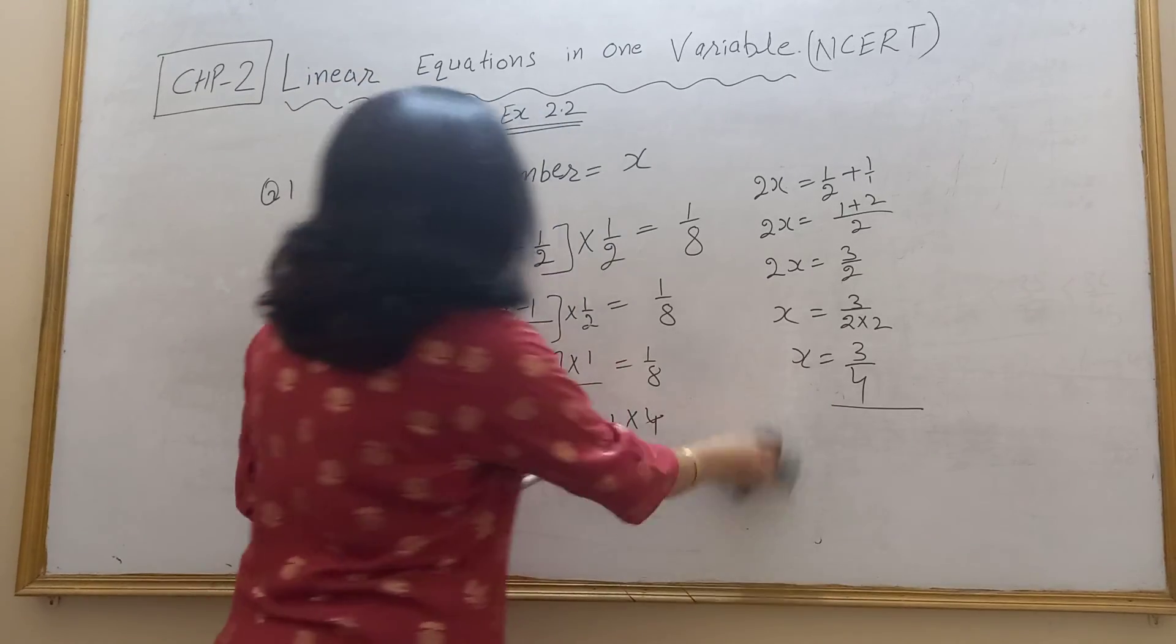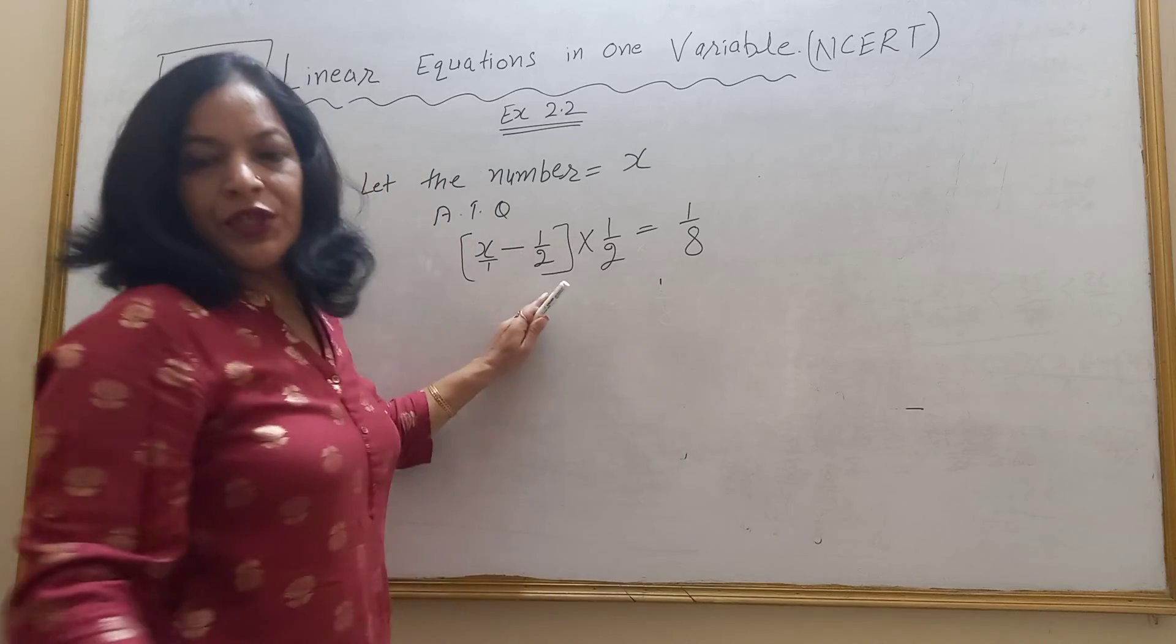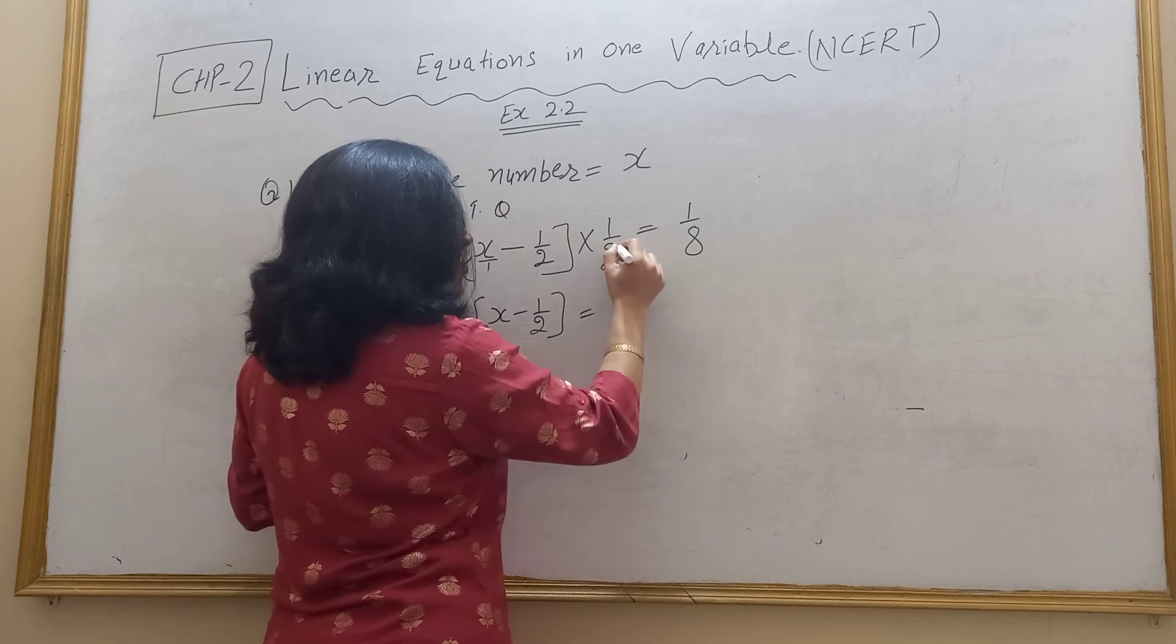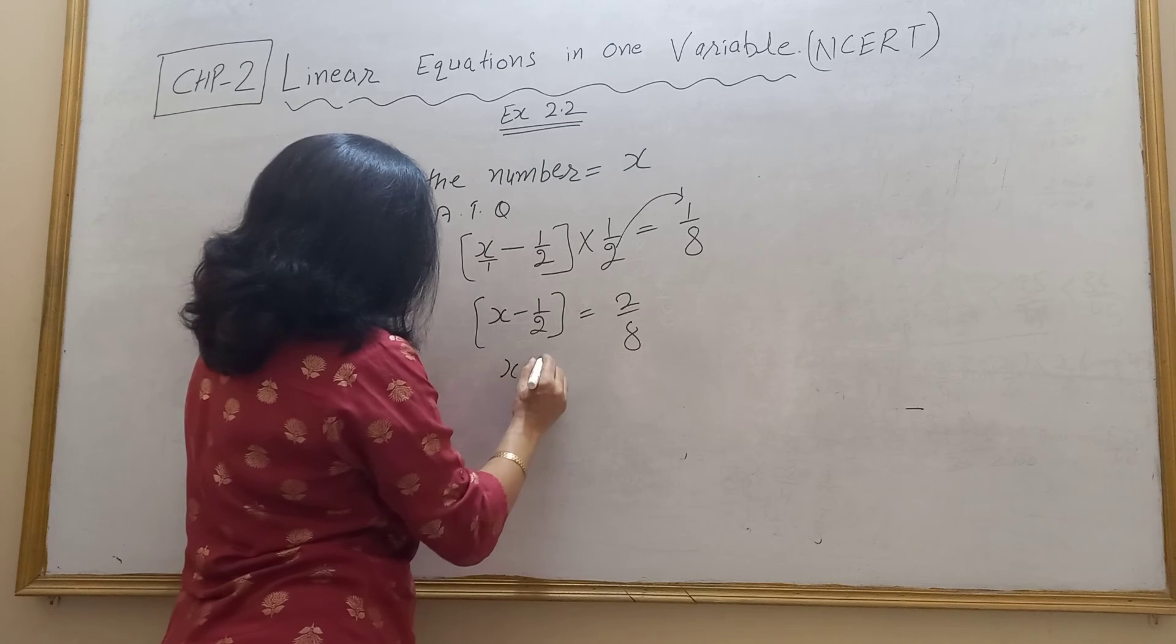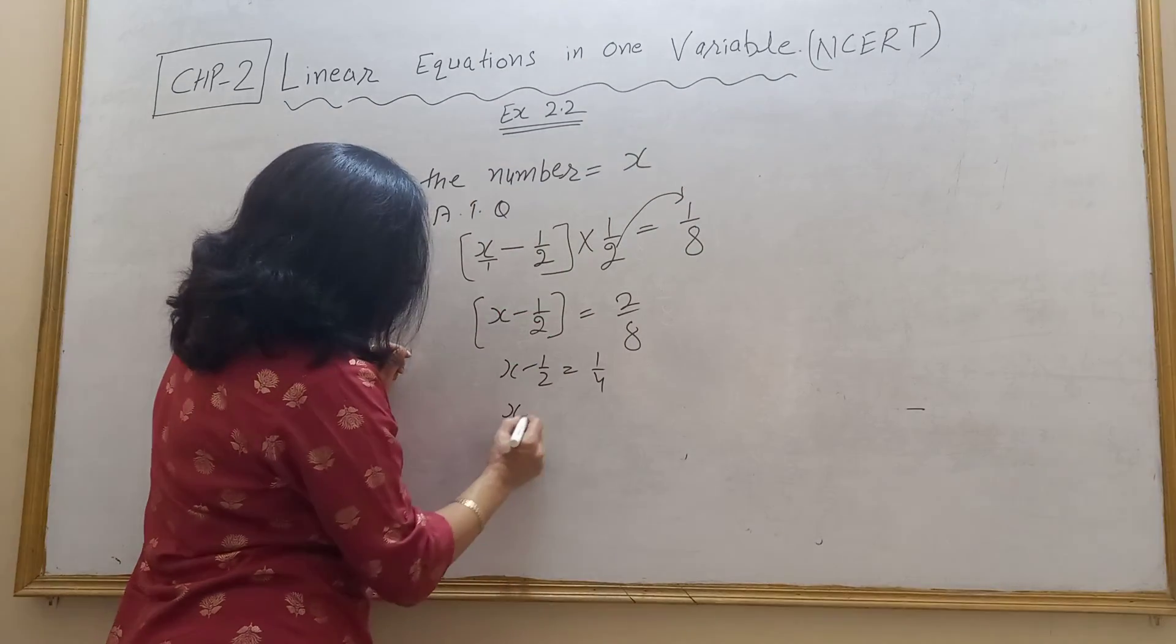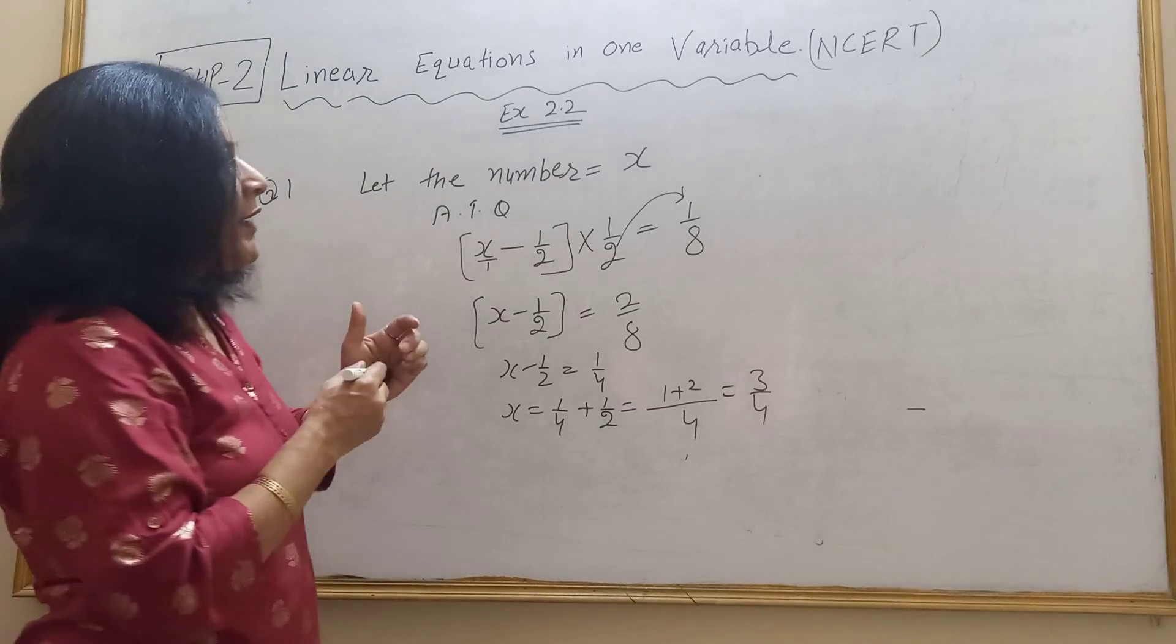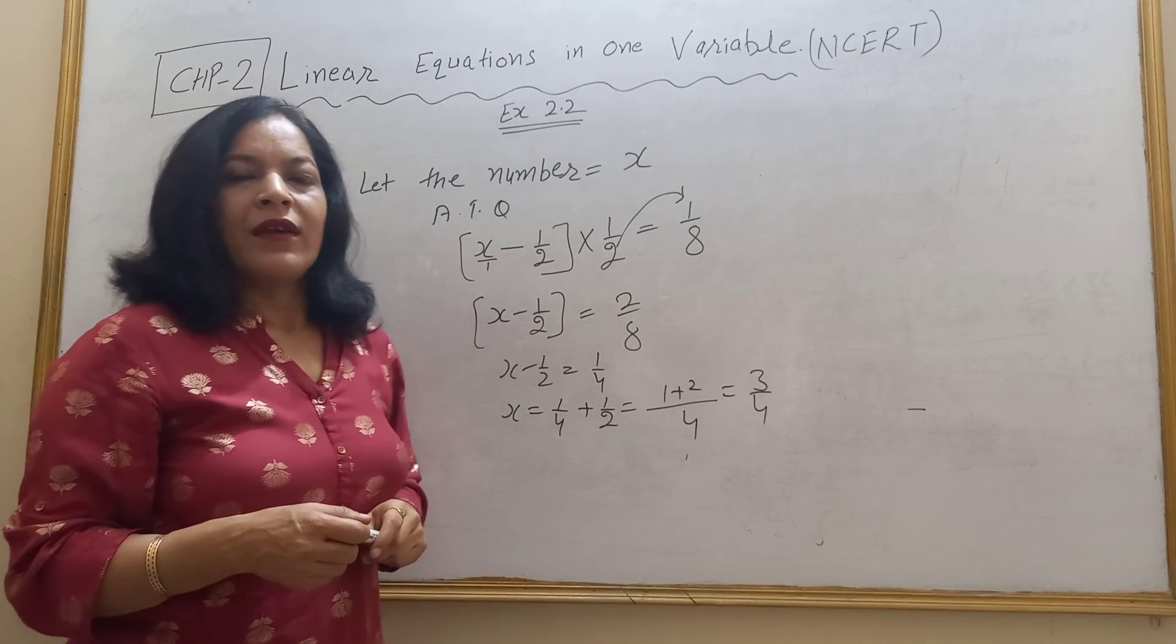Students, this equation can be solved, means this equation students can be x minus 1 by 2 bracket as it is 2 multiply both sides. 2 LCM will be 4 so it is 1 plus 2, answer is again 3 upon 4 so it doesn't matter, clear?